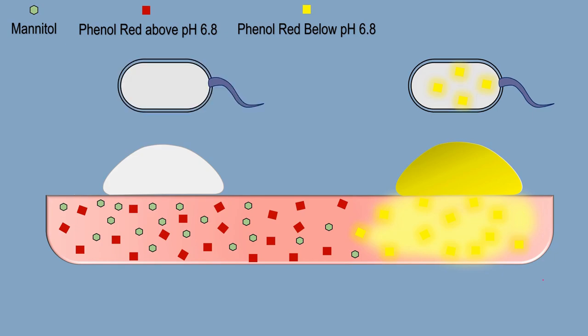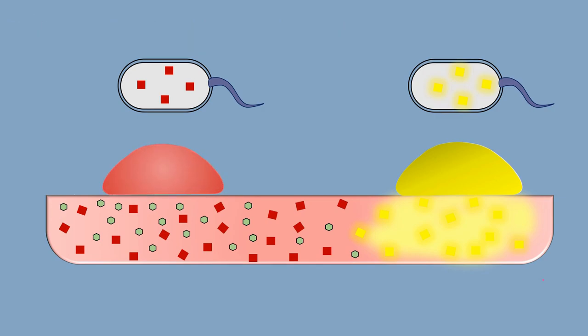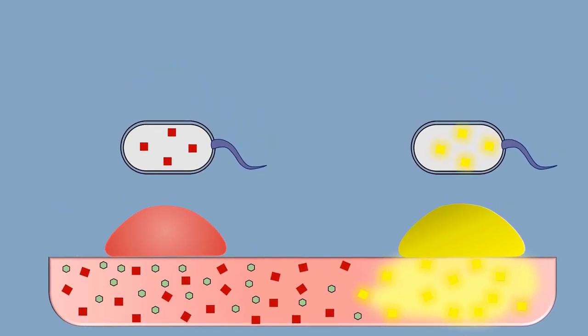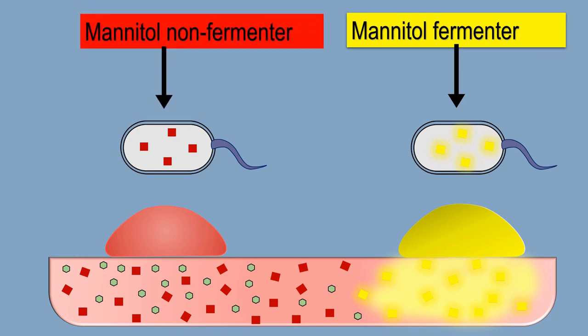Now suppose the bacteria present in a colony on the left side do not utilize any mannitol molecule. Since these bacteria don't utilize mannitol, there will be no fermentation of mannitol, and there will be no production of acid surrounding the bacterial colony. Therefore, the pH around this bacterial colony will remain neutral. At neutral pH, phenol red molecules appear red in color, therefore the whole colony appears red colored. In this way, the bacterial colony on the right side is a mannitol fermenter and the bacterial colony on the left side is a mannitol non-fermenter.